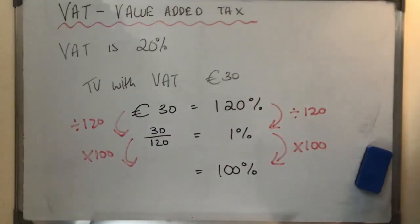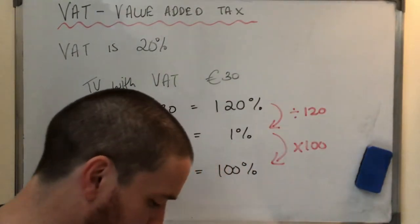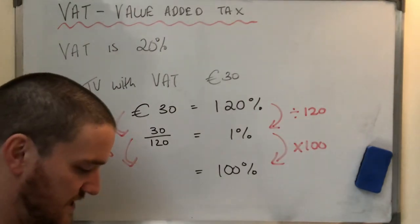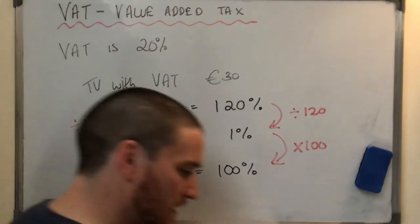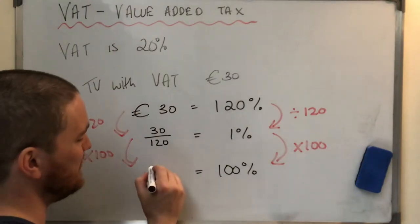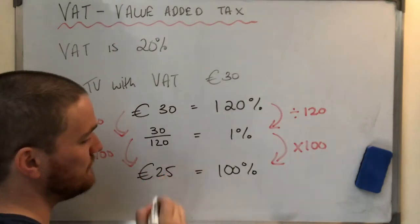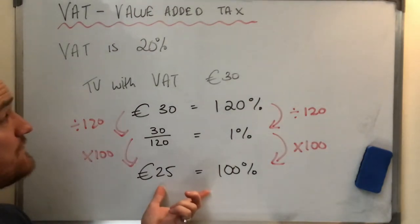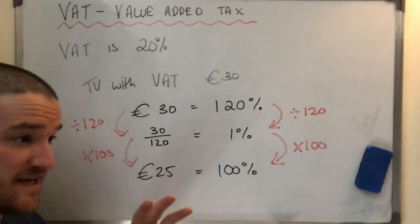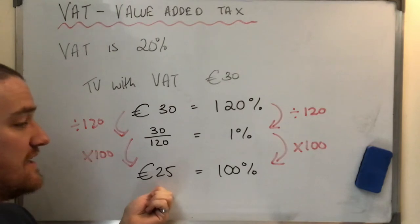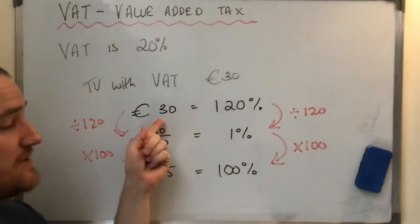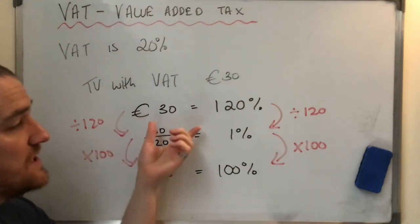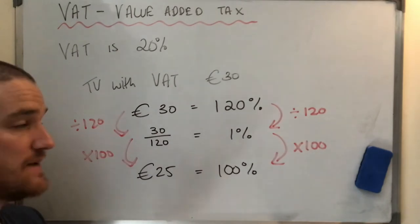So again, I'm not even going to do this in my calculator yet. I'm just going to put it as 30 over 120. Next, I have 1% and I want to make it 100. So I'm going to times by 100. If I do it on the right, I have to do it on the left. So I do 30 over 120 times by 100. So again, you can put this in your calculator now. 30 over 120 multiplied by 100 and a presto, I end up getting it that it's €25.